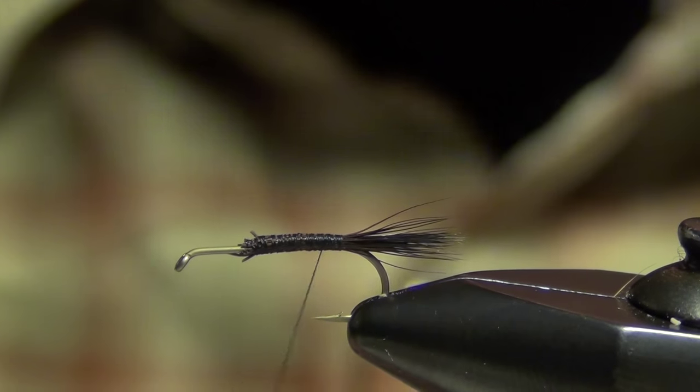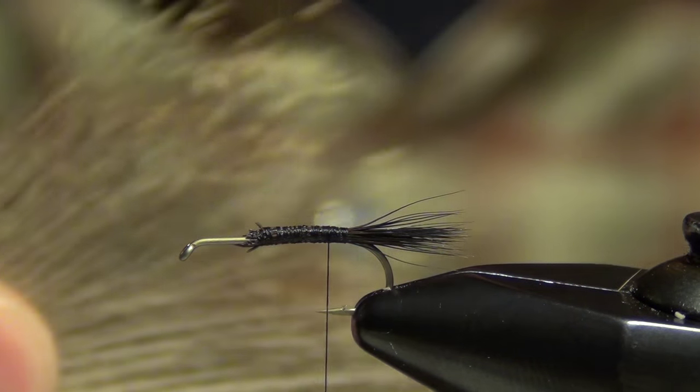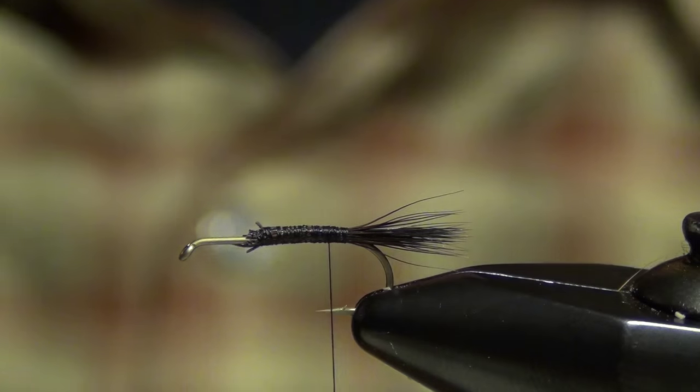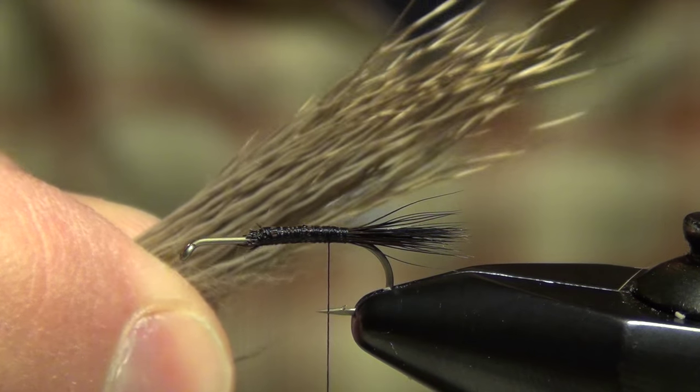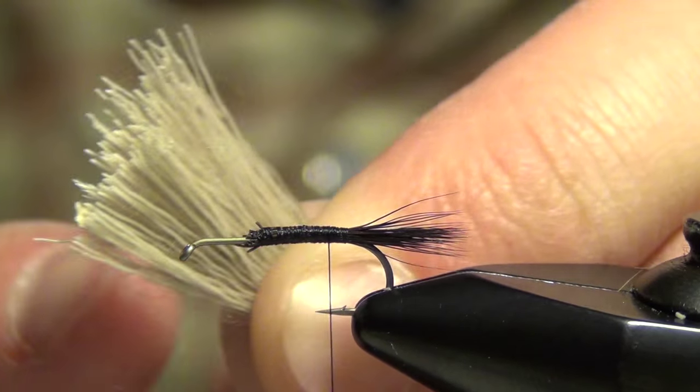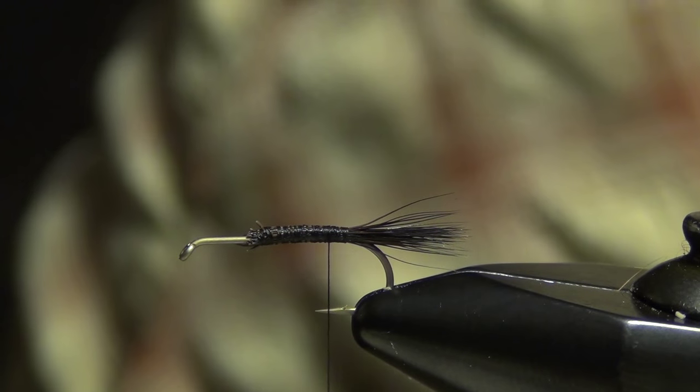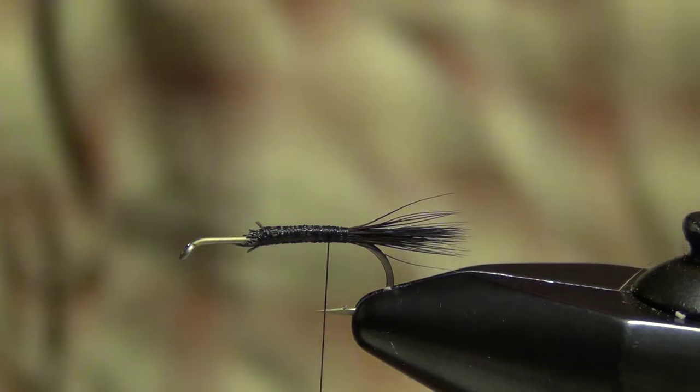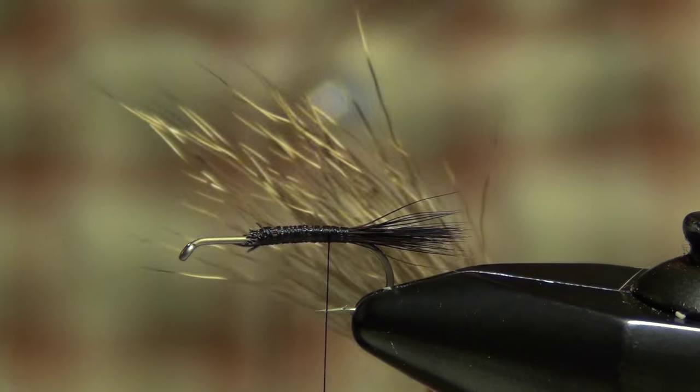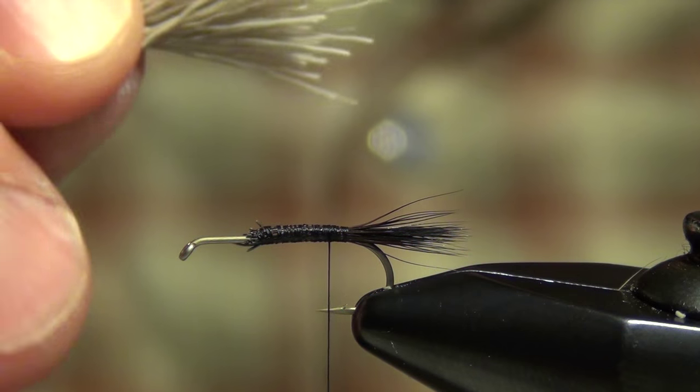I'm going to take my thread and take a couple wraps forward. I don't want my thread to be all the way back there, just a few wraps forward. Then I'm ready to tie in the body material, which is just some mule deer hair good for spinning. I'm going to start with a fairly generous clump, about three quarters of the size of a pencil to about the size of a pencil. Then I'm going to remove all of this fuzziness. I usually just pull it off with my fingers. Once you have it all pulled off, I like to trim off all the tips, so I have about a one inch clump of deer hair.